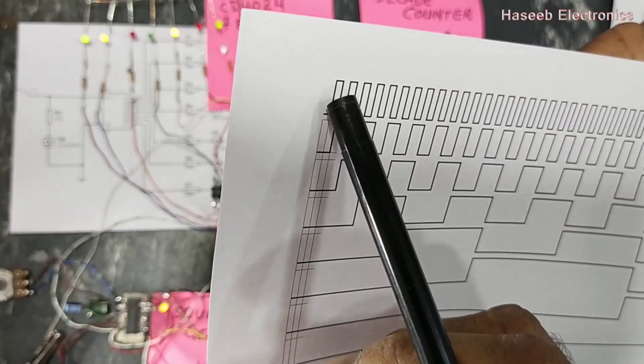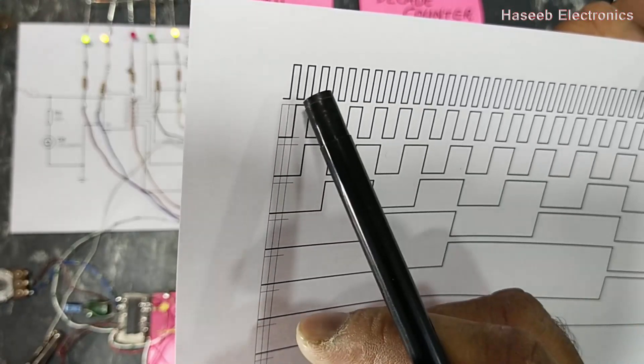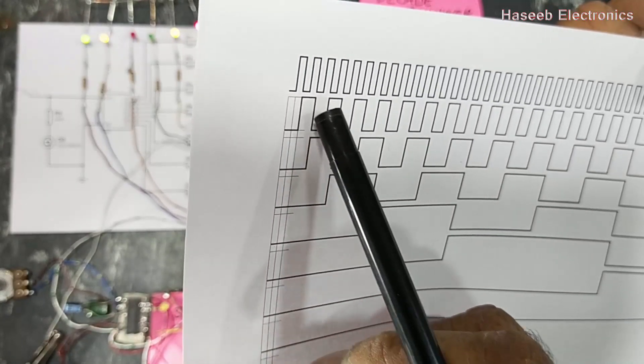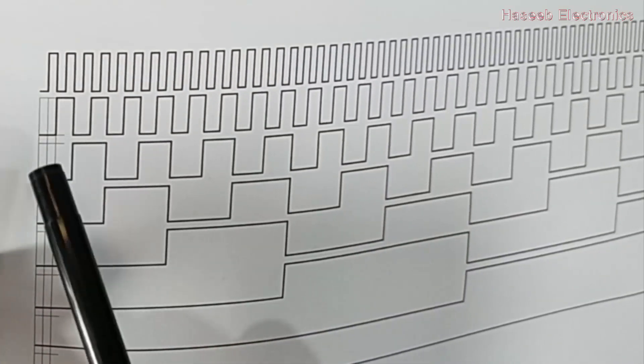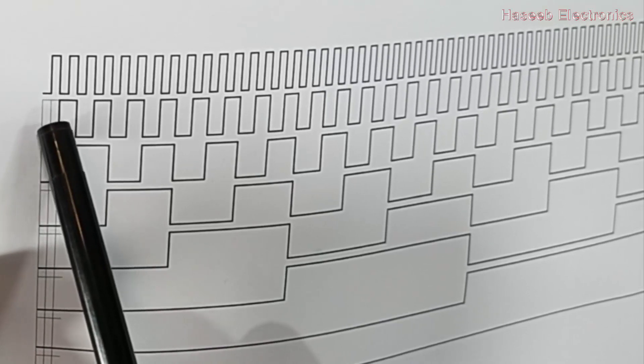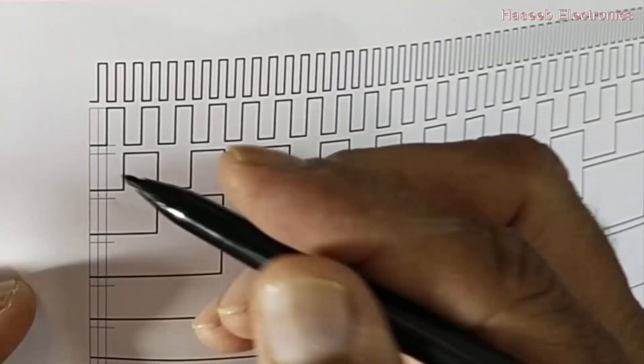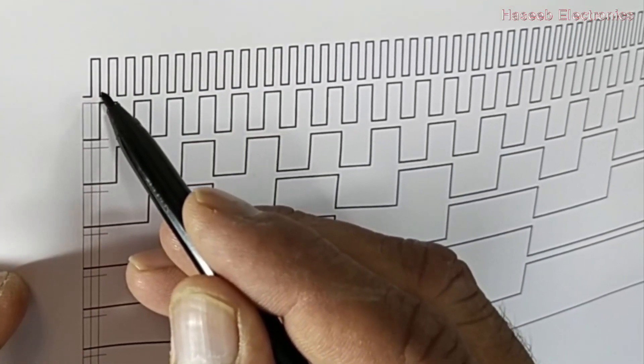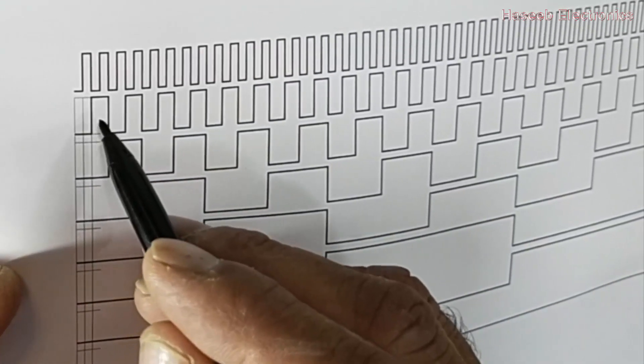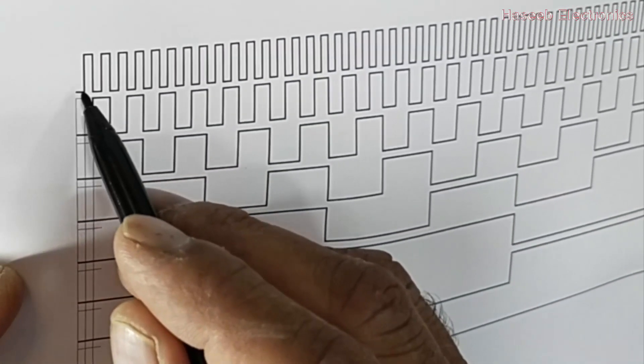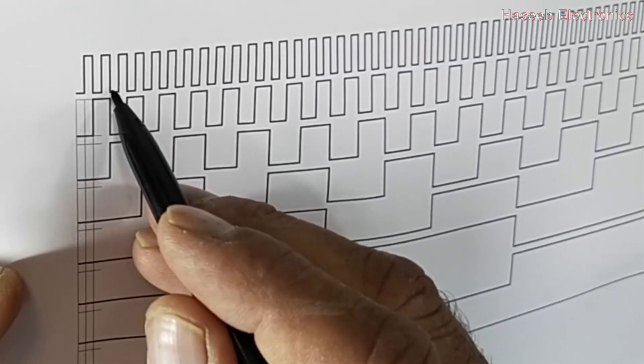We can check the timing diagram. In the timing diagram, the first line is the input pulses, clock pulses. This is output number one, output number two. At each trailing edge the next flip-flop will switch to high. If we look here, when the first clock pulse is coming high to low, the first output is high.